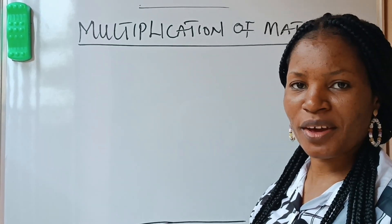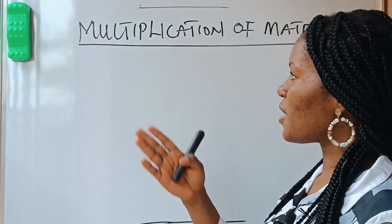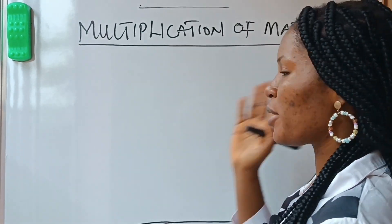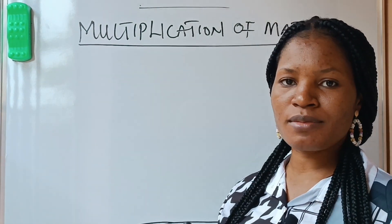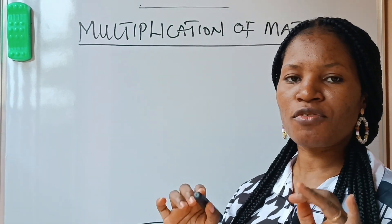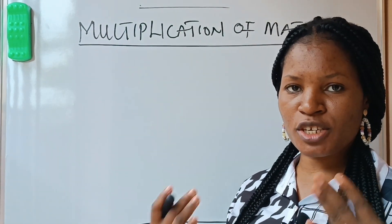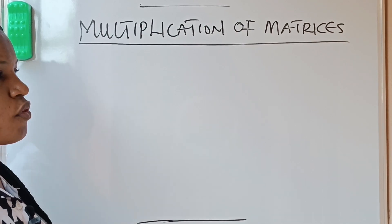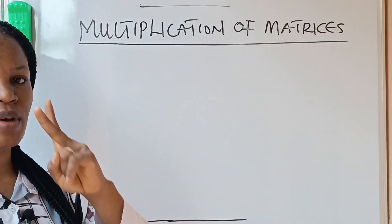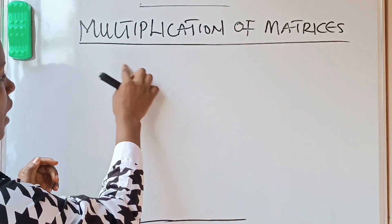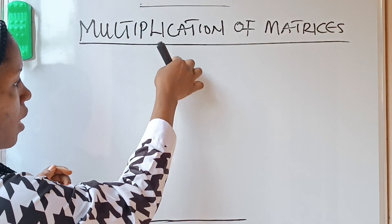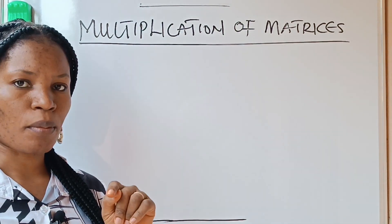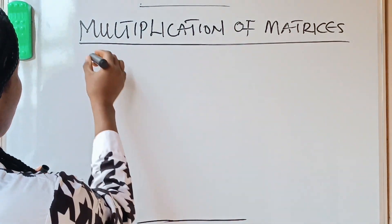Welcome back to my page. Today we are going to discuss multiplication of matrices. I would like you to calm down and pay attention to what I'm going to say. If you want to multiply two matrices together, once you multiply a row and a column, you are going to get one number. Let's start with an example.